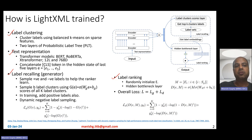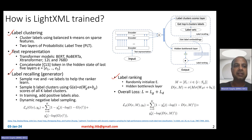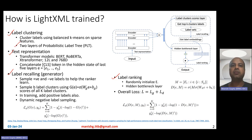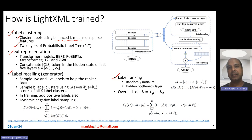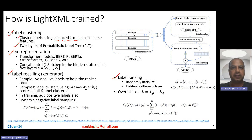The first step in LightXML is label clustering. Since the number of labels is too large, they reduce them to a controllable number of clusters. This label clustering is very similar to the Parabel tree construction — a probabilistic label tree — but they only do two layers of it. They take the large set of labels and cluster them using balanced hierarchical K-means where K is set to two, operating on sparse TF-IDF vector representations of label text.